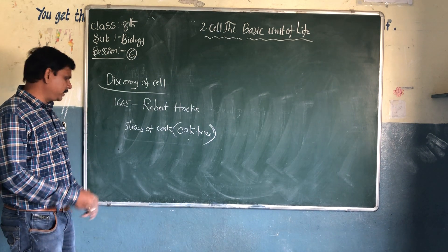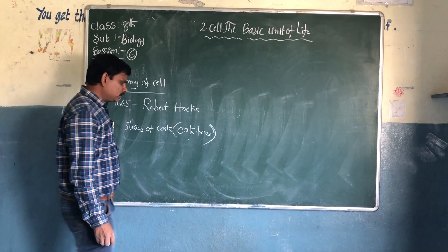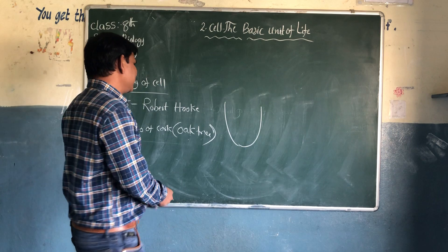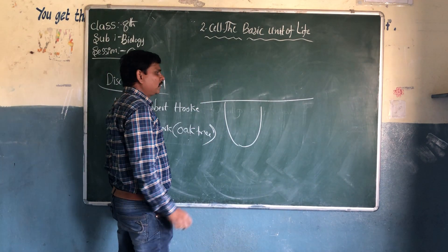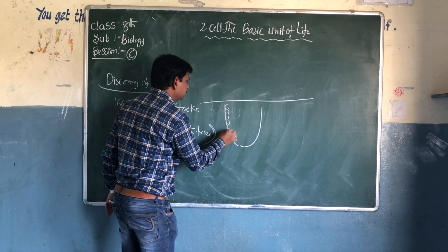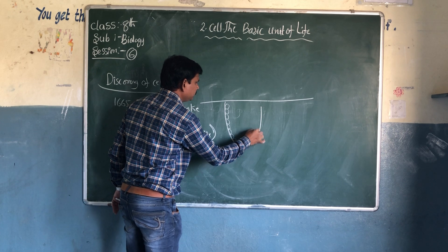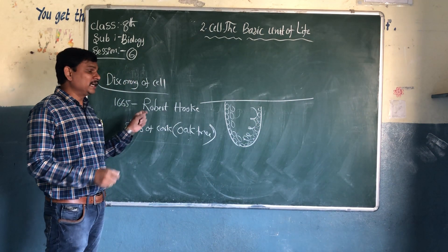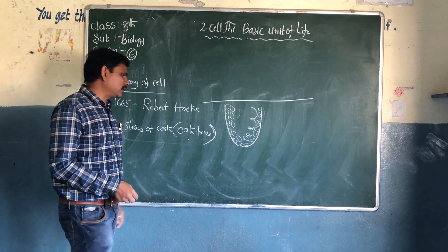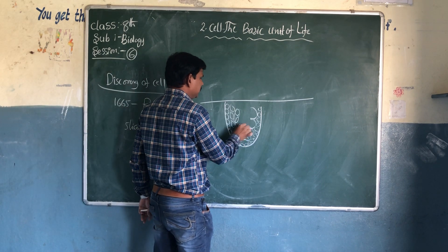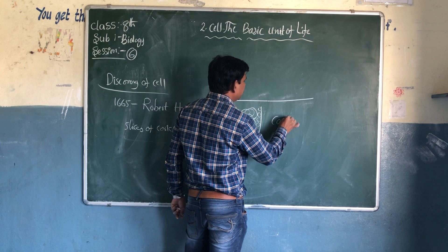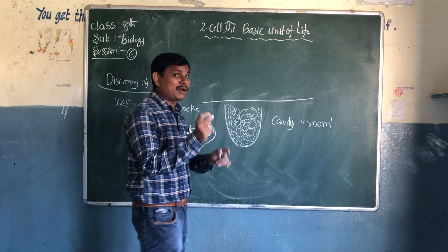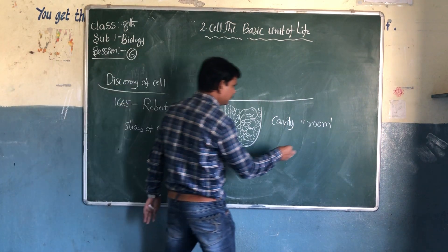When he observed the slices of the cork, they looked like a honeycomb. Have you seen a honeycomb? It will attach to a stick and they have small spaces. When he observed this, the cell resembled a honeycomb — it was having small cavities. This cavity is called a room. He named it a 'small room' — this cavity was given the name 'small room.'